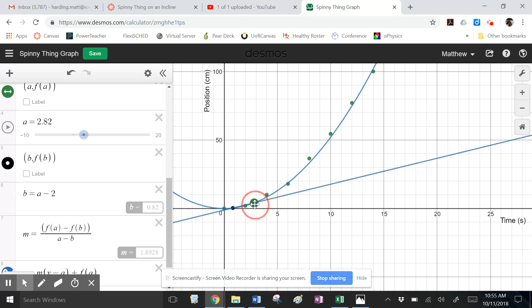If I want to know the velocity at time two seconds, I put A at three. That means that B would be at three minus two. So B is at one. So I'm same space either side of two seconds. I get a slope value of 2.08. That would be centimeters per second.